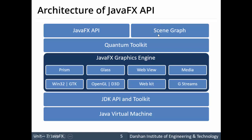In summary, the scene graph is the main and initial component for developing GUI-based applications using JavaFX. The scene is developed using JavaFX graphics engines — Prism, Glass Windowing Toolkit, Web View, and Media Engine. Prism maps to OS-specific rendering components, Glass Windowing Toolkit maps to OpenGL, Web View maps to WebKit, and Media maps to GStreamer. This complete JavaFX graphics engine runs on the JDK API.